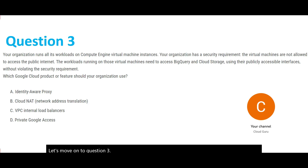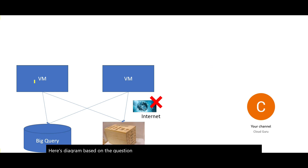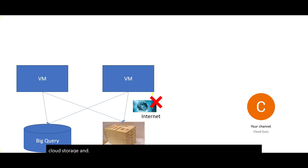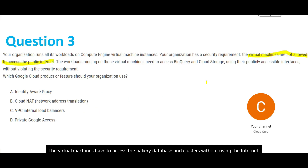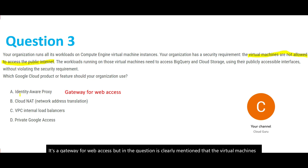Moving on to Question 3. Please read the question and pause the video if needed. The key phrase here is that the virtual machines are not allowed to access the public internet. In the diagram, two virtual machines need to access the BigQuery database and Cloud Storage without using the internet. Option A, Identity Aware Proxy, is a gateway for web access, but since the VMs cannot access the public internet, it is not the answer.